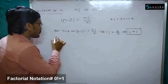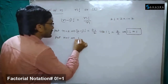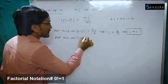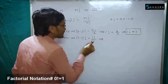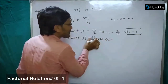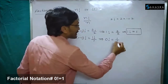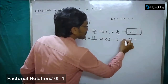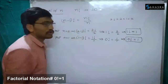Put n is equal to 1. This implies: in place of n put 1. So 1 minus 1 factorial is equal to 1 factorial by 1. 1 minus 1 is nothing but 0. So 0 factorial is equal to what is 1 factorial? We already found 1 factorial is nothing but 1. It is divided by 1. So 0 factorial is equal to 1 divided by 1, which is equal to 1.